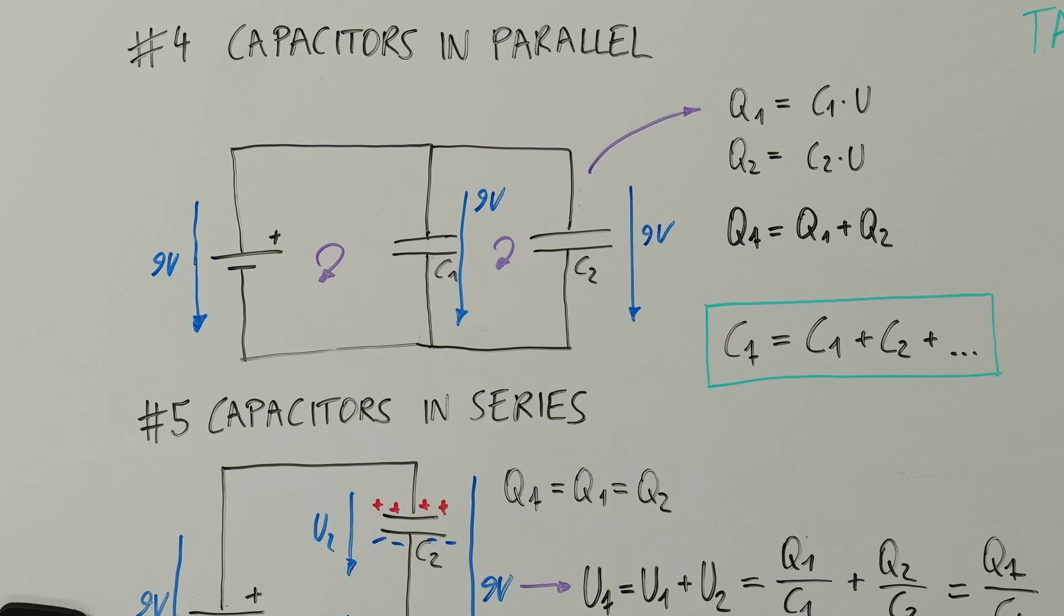If we add multiple capacitors, we have to determine the equivalent capacitance. In parallel, capacitors experience the same voltage. In this case, the charges of the single capacitors add up. Therefore, the capacitances of the single capacitors add up as well.